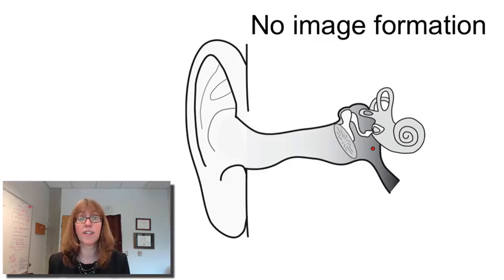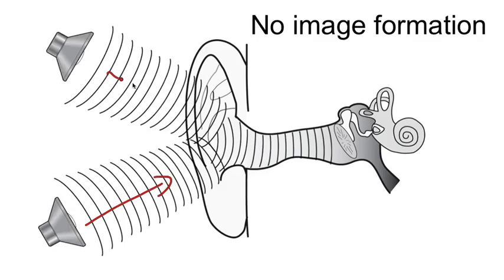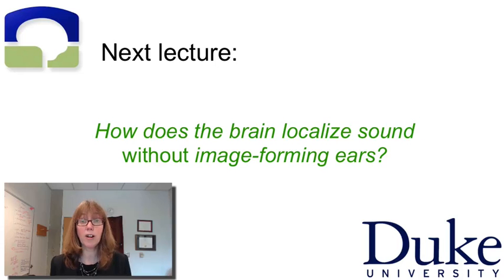One thing that's missing here is that there's really nothing in the way that sound waves are converted into an electrical signal in neurons that involves anything about the spatial location of the stimulus. A sound coming from here and a sound coming from here enter the same ear canal. They pass along that ear canal. They cause the eardrum to vibrate and so forth. As the sound wave enters the ear canal, information about where it might have come from is lost. It is no longer a characteristic of that sound wave. But nevertheless, we are able to hear where sounds are coming from. How does the brain localize sounds if it doesn't have image forming ears to help it do so? That's what I'll talk about in the next video.